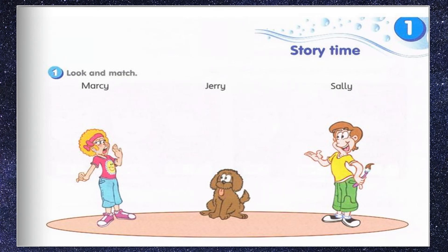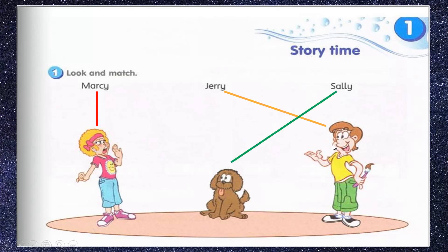Are you done? Let's see — which one is Marcy? Yes, she is Marcy. Who's Jerry? Yes, he is Jerry. And who's Sally? Of course, the dog. Her name is Sally. Good job!